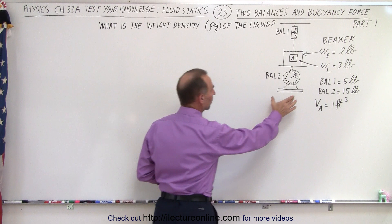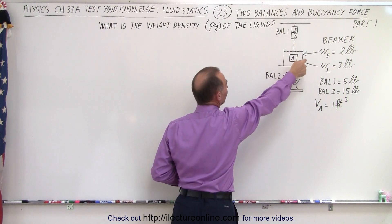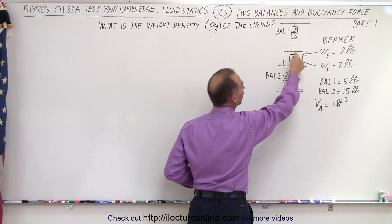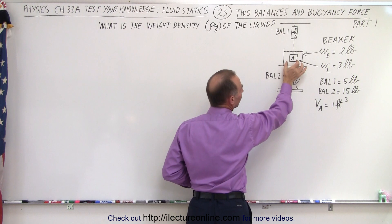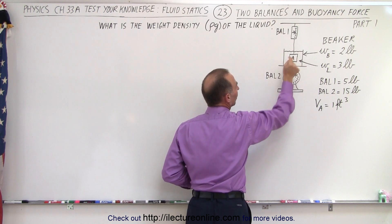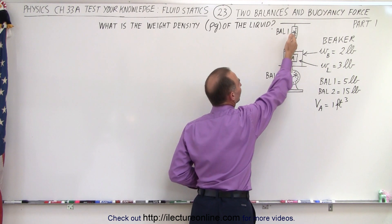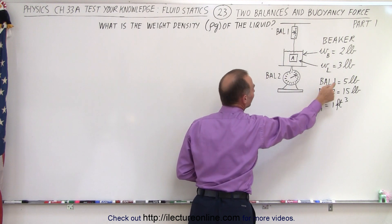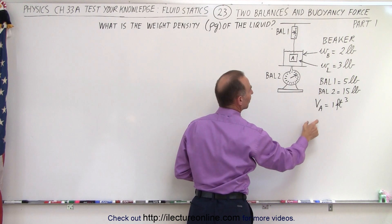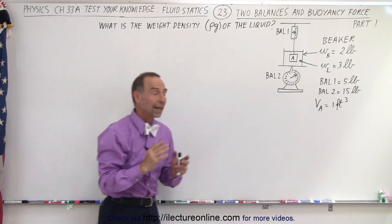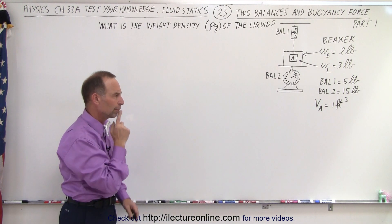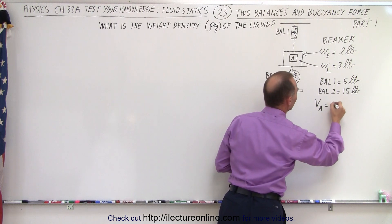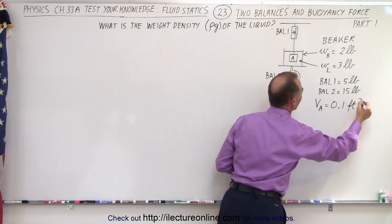Here we have two balances: one at the bottom, one between the ceiling and our experiment. We have a beaker that has a weight of two pounds containing a liquid that has a weight of three pounds, and inside the liquid, suspended, is block A. Block A is suspended from the top balance and is inside the liquid. The volume of block A is 0.1 cubic foot.